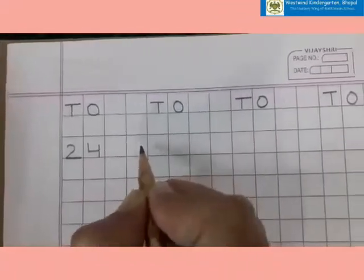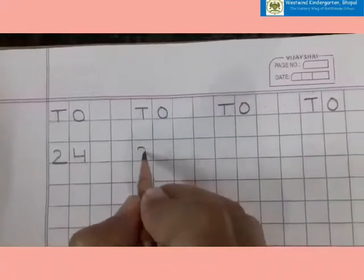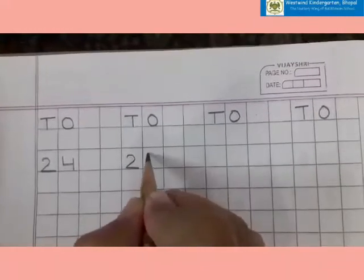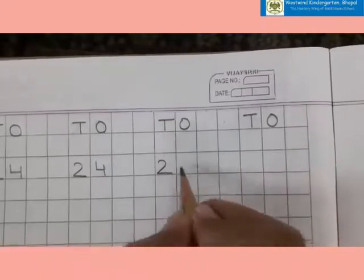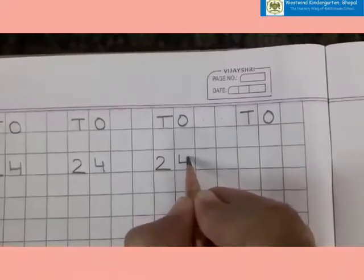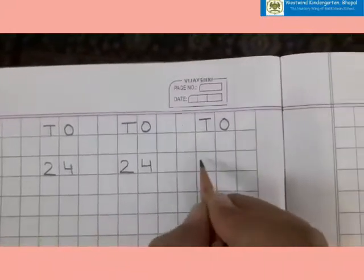Leave two boxes. 2 and 4. 24. Again, from the middle of the box and from the middle of the box you have to start. 2, touch the bottom line, and 4.